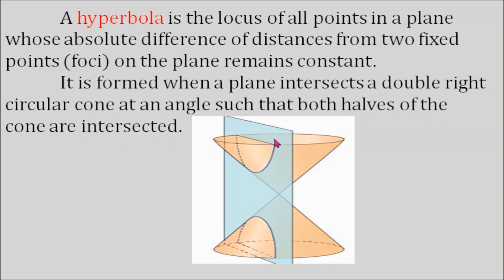Here is the illustration. This is our plane, and we have here a double right circular cone. As you notice, a hyperbola is formed on the intersection.